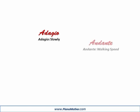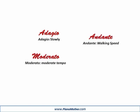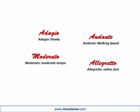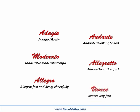Tempo markings tell how quickly or slowly to play. Adagio — slowly. Andante — walking speed. Moderato — moderate tempo. Allegretto — rather fast. Allegro — fast and lively, cheerfully. Vivace — very fast.